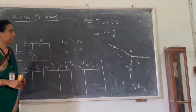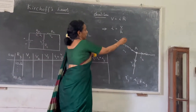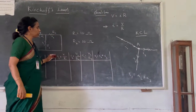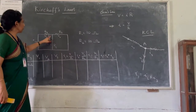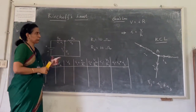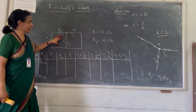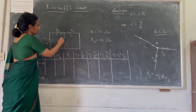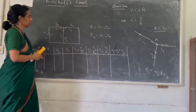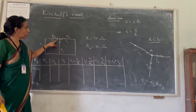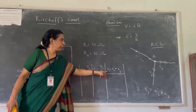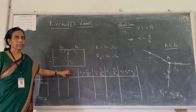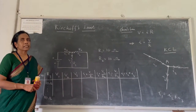This is Kirchhoff's current law, KCL. From this circuit, we can justify Kirchhoff's first law: the incoming current I1 is equal to the outgoing currents I2 and I3, so I1 is the sum of I2 and I3. Using the observations from voltmeters V1, V2, and V3, we can prove Kirchhoff's current law, KCL.